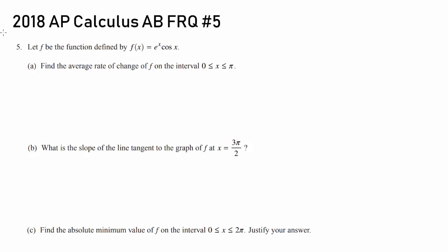Let f be the function defined by f of x equals e to the x times cosine of x. We wish to find the average rate of change of f on the interval from 0 to pi.